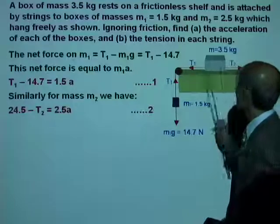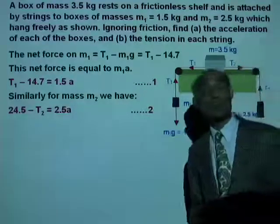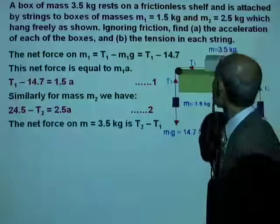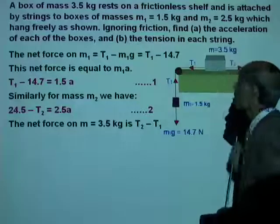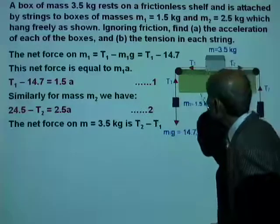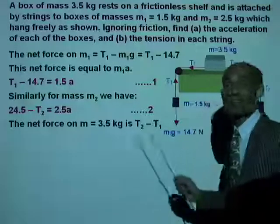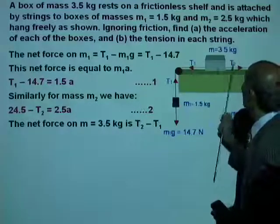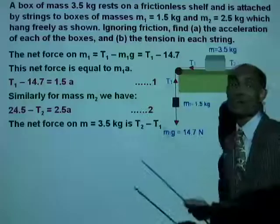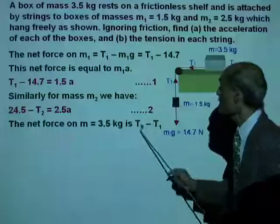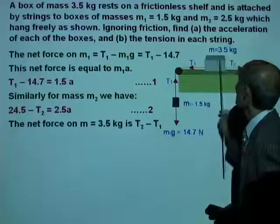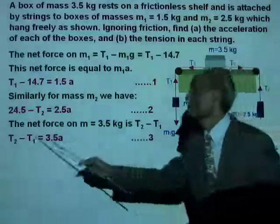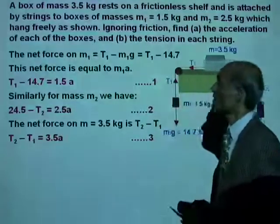How about the mass M3? Can you write an equation for that? What is the net force on M3? The tension T2 is pulling it to the right. The tension T1 is pulling it to the left. And since the system is moving to the right that way, we say the net force is T2 minus T1. So T2 minus T1, the net force, equal to M3.5A. So T2 minus T1 equal to 3.5A.